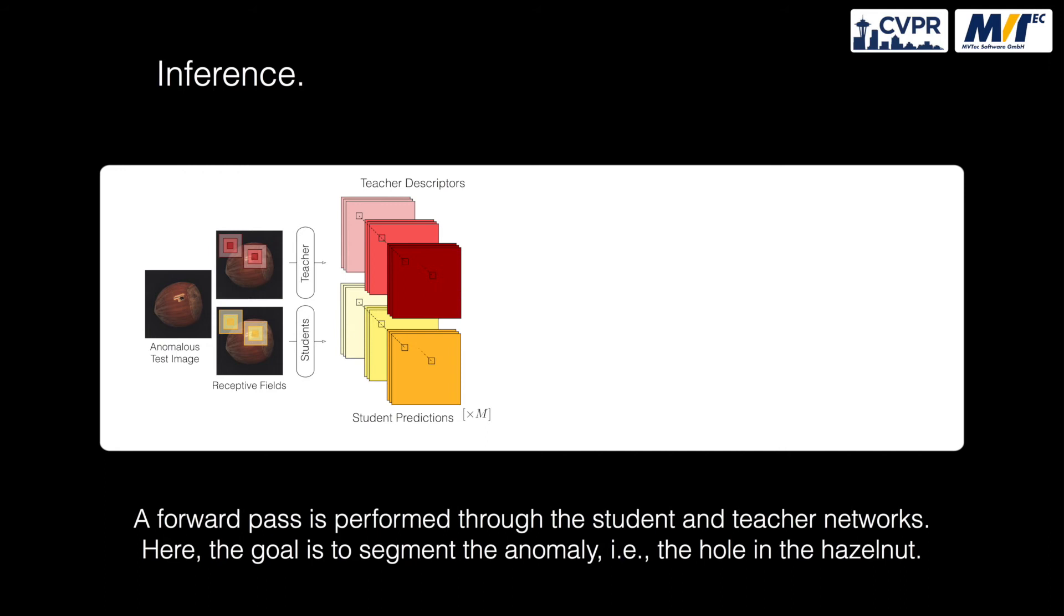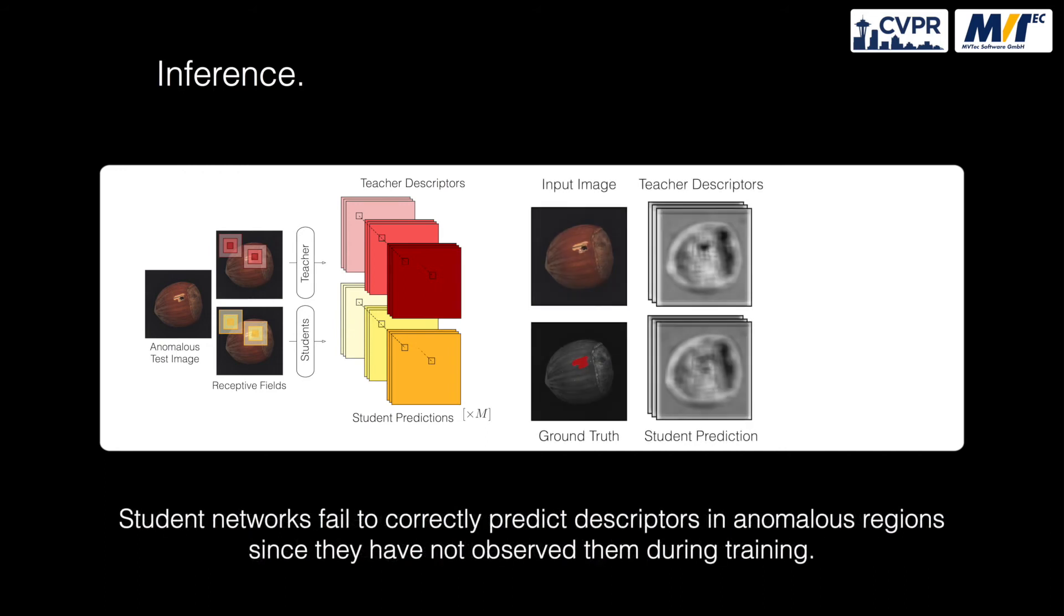During inference, the goal is to segment anomalous regions that differ from the training data. A forward pass is performed through the student and the teacher network.